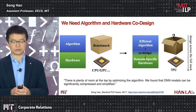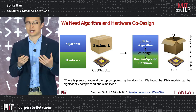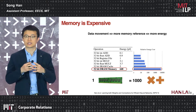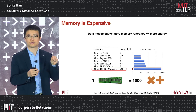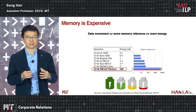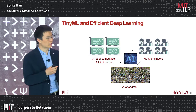We find there is actually a huge room at the top by optimizing the algorithm. Deep neural networks can be significantly compressed and simplified. The energy consumption is dominated by memory access, so if we can compress the model and reduce its size, it will be much easier to squeeze neural networks into tiny edge AI hardware platforms. Reducing model size also saves battery life.